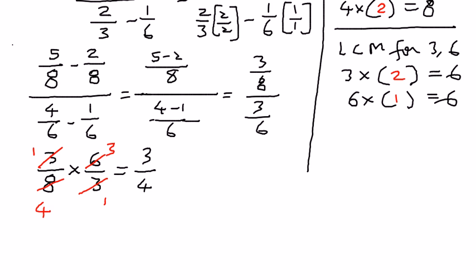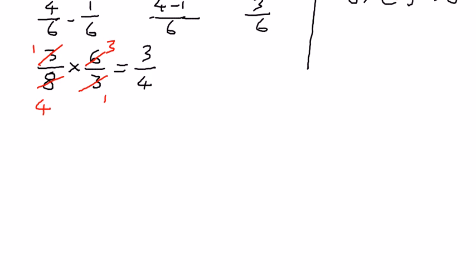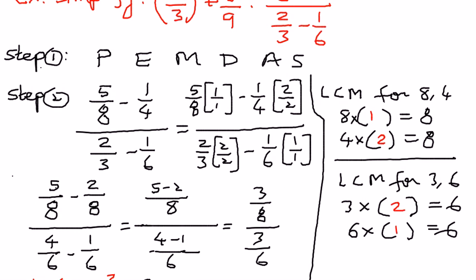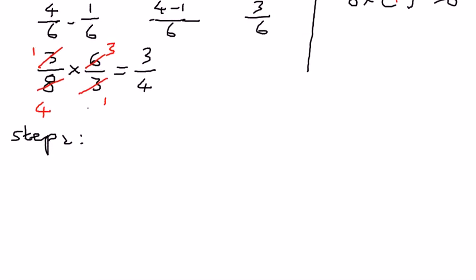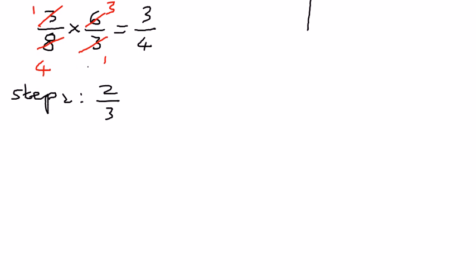We simplified just one part of the equation, so we go back and write step 2 with the full equation. The problem was: 2 over 3 raised to the power of 2, plus 8 over 9 times 5 eighths minus 1 fourth, divided by 2 thirds minus 1 sixth. We simplified that fractional part, so we replace it — the whole complex fraction reduces to 3 over 4. Now the expression reads: 2 over 3 to the power of 2, plus 8 over 9 times 3 over 4.